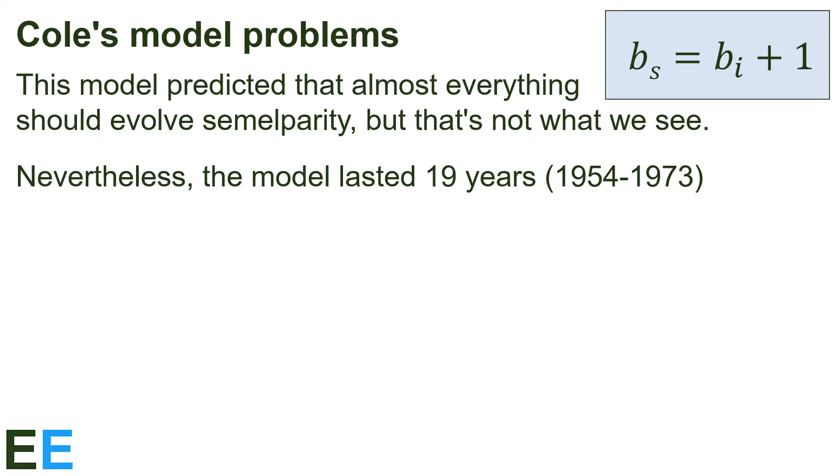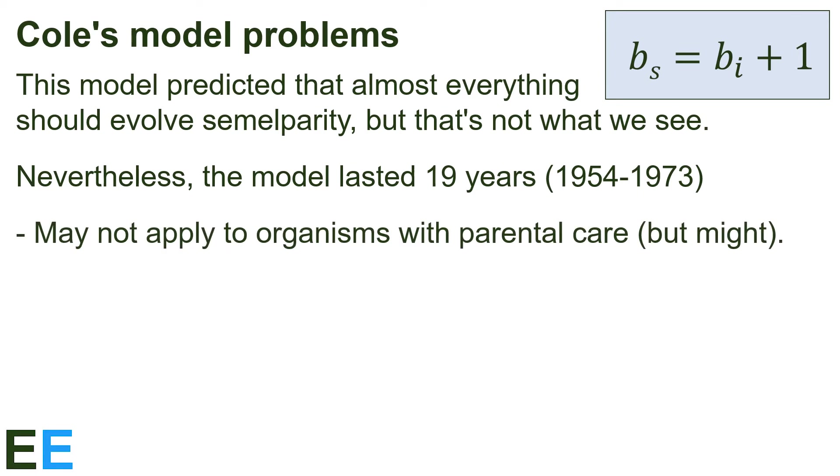Over time, some people did identify specific problems with the model, however. The model may not apply to organisms with parental care, because if the adults sacrifice themselves, their offspring wouldn't survive. It might apply if the sacrifice isn't total, though, saving enough energy to take care of the young and just giving up future reproduction.